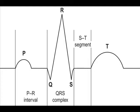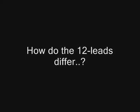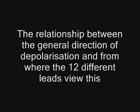This complex represents sinus rhythm, which we hope to see in our patients. But the question is: if the patient is in sinus rhythm, how do the leads differ on the 12-lead ECG? It's about the relationship between the general direction of depolarization through the heart and from where the 12 different leads view this. Remember that when we refer to leads, this can mean two things — the electrodes we attach to the patient, but also the points from which the ECG is looking at the heart, and that's what we're referring to here.